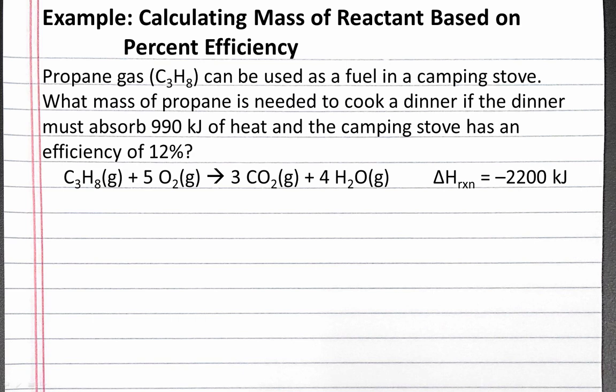Our reaction for the combustion of propane gas is C3H8 plus 5 O2 gas produces 3 carbon dioxide gas plus 4 water vapor. The change in enthalpy for the reaction is negative 2200 kJ.